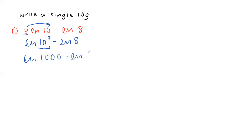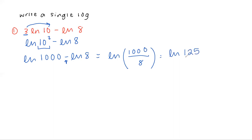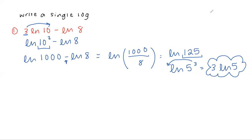So we have natural log of 1000 minus natural log of 8. They are separated by subtraction, which means I should use the quotient property — write log once and combine the numbers using division. 1000 divided by 8 works out evenly to 125, giving us natural log of 125. You can simplify further since 125 is 5 cubed, moving the 3 out front for a final answer of 3 natural log of 5. Writing natural log of 125 would only cost you one point, but you should go the extra step when possible.